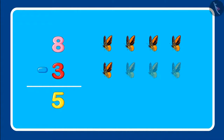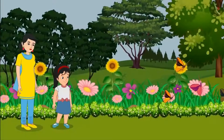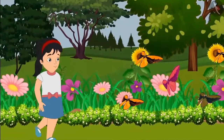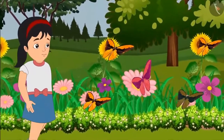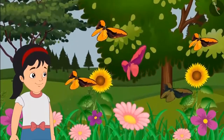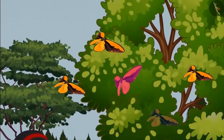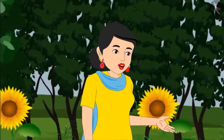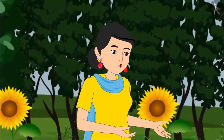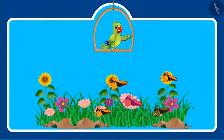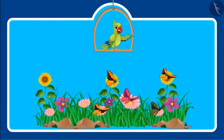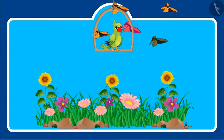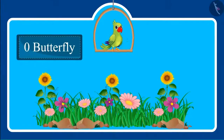Now let's go back to Pinky and her mother in the garden. Pinky goes a little more close to the flowers to see the remaining five butterflies more closely. As soon as she goes near the flowers, all five butterflies fly away. Oh, Mommy, all five butterflies flew away. So children, if out of the five butterflies all five flew away, then how many are left? There are not even a single butterfly left on the flower. This means zero butterflies were left.